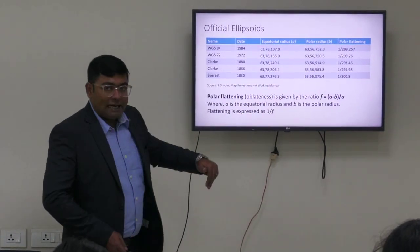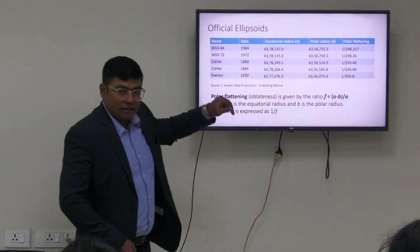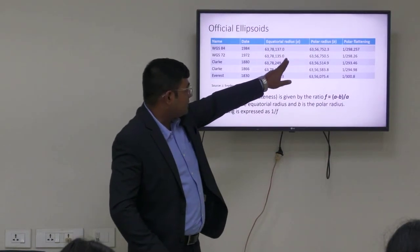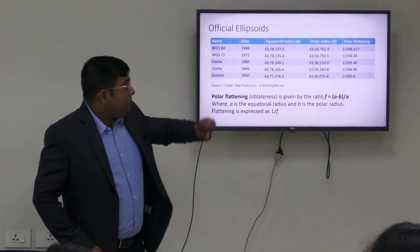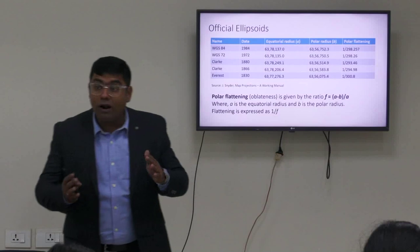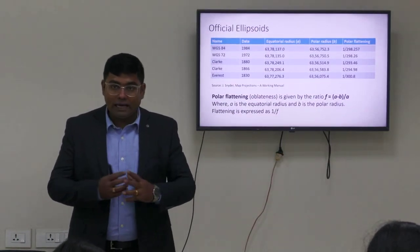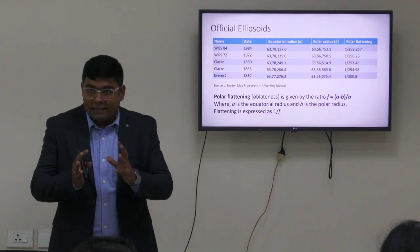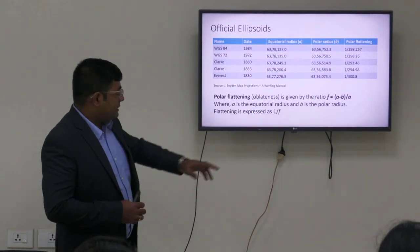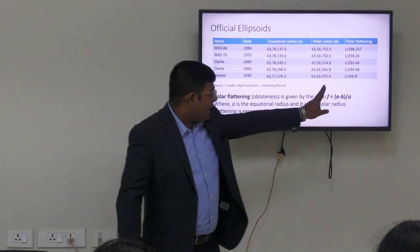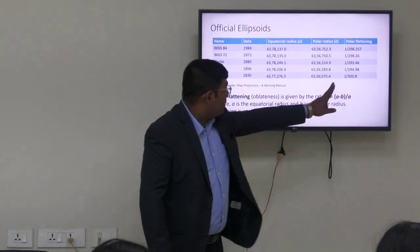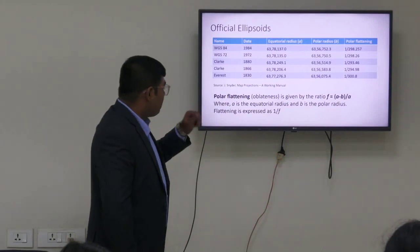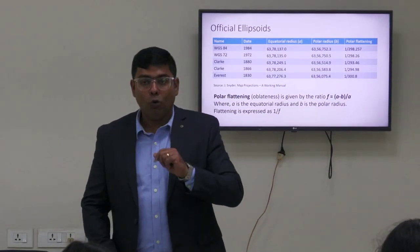The most widely used ellipsoidal model of the Earth is the World Geodetic System 1984, WGS84. Here, the equatorial radius is 6,378.137 km and the polar radius is 6,356.752 km. The measurement for the flattening of the polar areas is known as polar flattening, also called oblateness. Polar flattening F equals (A minus B) divided by A, and it is always expressed as a ratio 1/F.